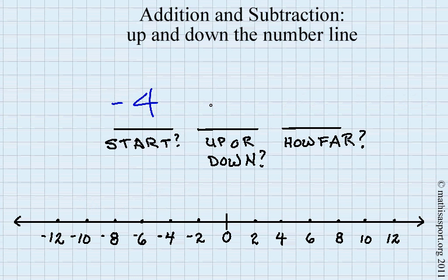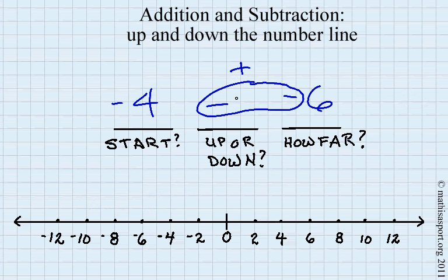Last one: negative 4 minus negative 6. What did we learn about negative-negative? This is the same as plus. So we go up six: 1, 2, 3, 4, 5, 6. Our answer is 2. It may seem simple, but if you use this method you will never get confused about negative numbers.